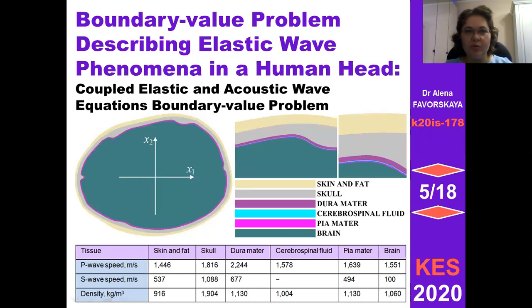Let's discuss boundary value problem describing elastic wave phenomena in human head. Here we can see human head and two axes along OX1 and along OX2 directions. There are some layers in human head, some of them are very thin. You can see here this picture, and all layers are colored as shown here, and the table of speeds of waves and density are here.